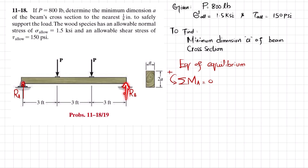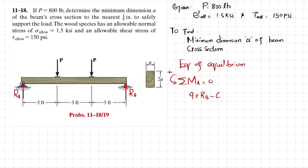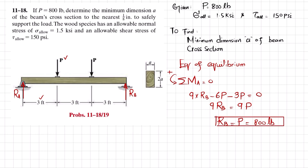About point A: Rb has a perpendicular distance of 9, producing a counterclockwise moment, so 9·Rb is positive. The load P at distance 6 produces a clockwise moment: minus 6P. The other load P at distance 3 gives minus 3P, all equal to zero. So 9·Rb = 9P, giving Rb = P = 1800 pounds.